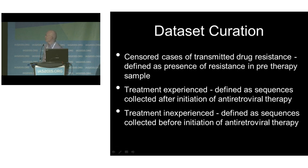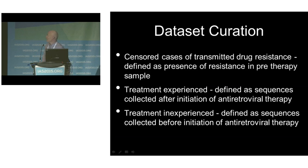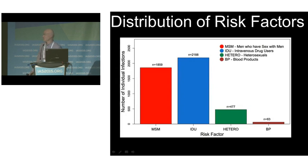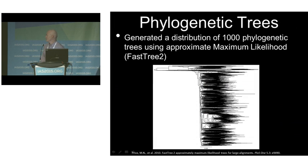The patients are distributed according to different risk factors: roughly 2,000 MSMs, just over 2,000 IDUs, almost 500 heterosexuals, and a few blood product transmissions. We first generated a distribution of 1,000 phylogenetic trees using approximate maximum likelihood. For each of those trees, we calculated lineage-specific diversification rates for each lineage in the tree, then calculated the mean rate for each lineage, mapped that rate onto a particular tree, and compared treated lineages to untreated lineages.